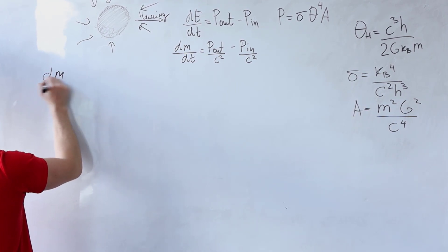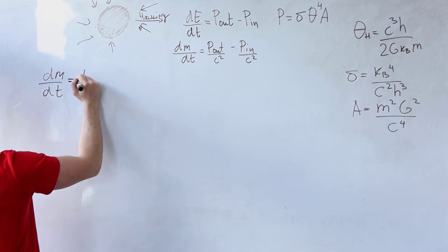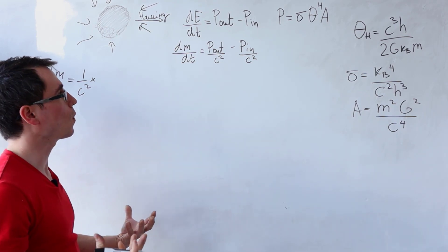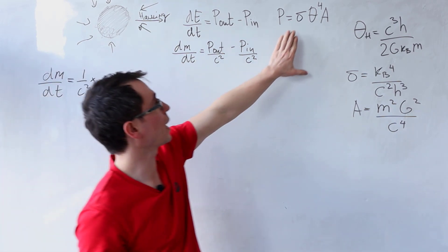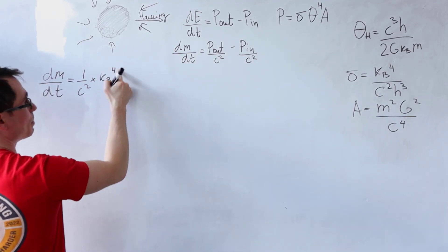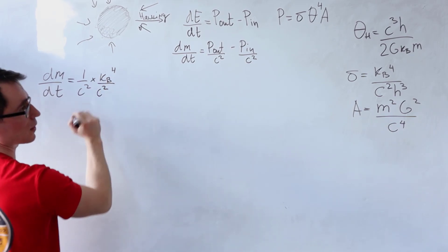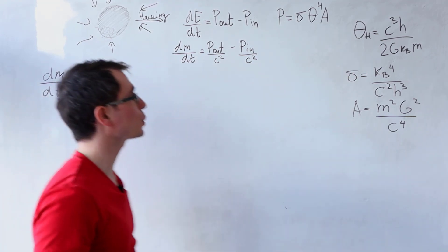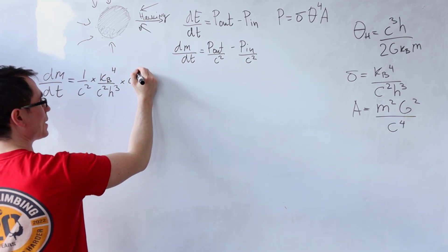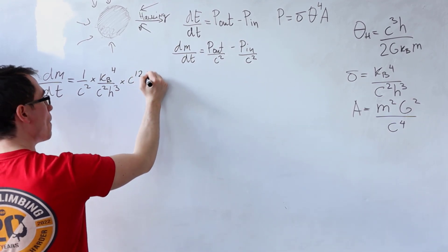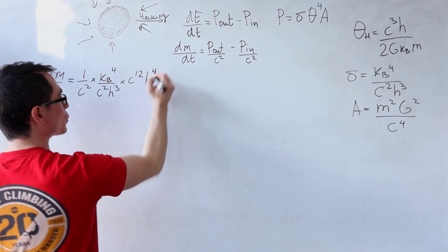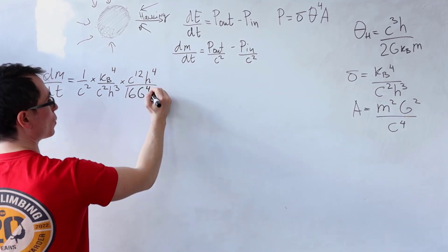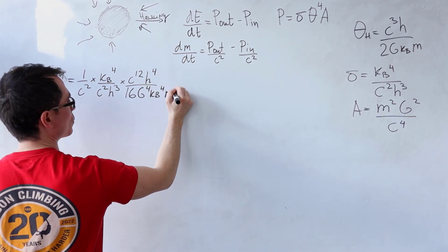What we get is that dM/dt equals 1 over c² times the total power coming out of the black hole due to Hawking radiation, given by Stefan-Boltzmann's constant — which is k_B to the power 4 divided by c² h³ — multiplied by the Hawking temperature to the power of 4, which gives c to the power 12 multiplied by h to the power 4, divided by 16 G to the 4th, k_B to the 4th, and M to the 4th.